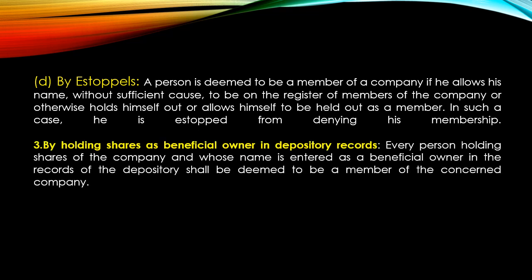Next is by holding shares as a beneficial owner in the depository record. Just as a person becomes a member of the company by having their name entered in the register of members, similarly, if the company's shares are in electronic form, then the depository's name appears in the register of members. But in the depository's own register, the name of the beneficial owner — the person who has actually acquired the company's shares — appears. So in the case of electronic form shares, whoever's name appears in the depository register as a beneficial owner will be considered a member of the company.